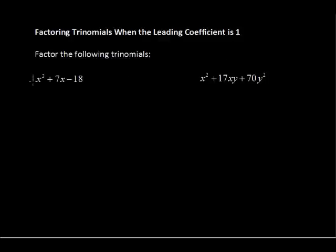That is, this number being multiplied by the first term is just 1. And we know that if we do not see a number, it's implied that it's just 1. 1 times x squared is the same as x squared.